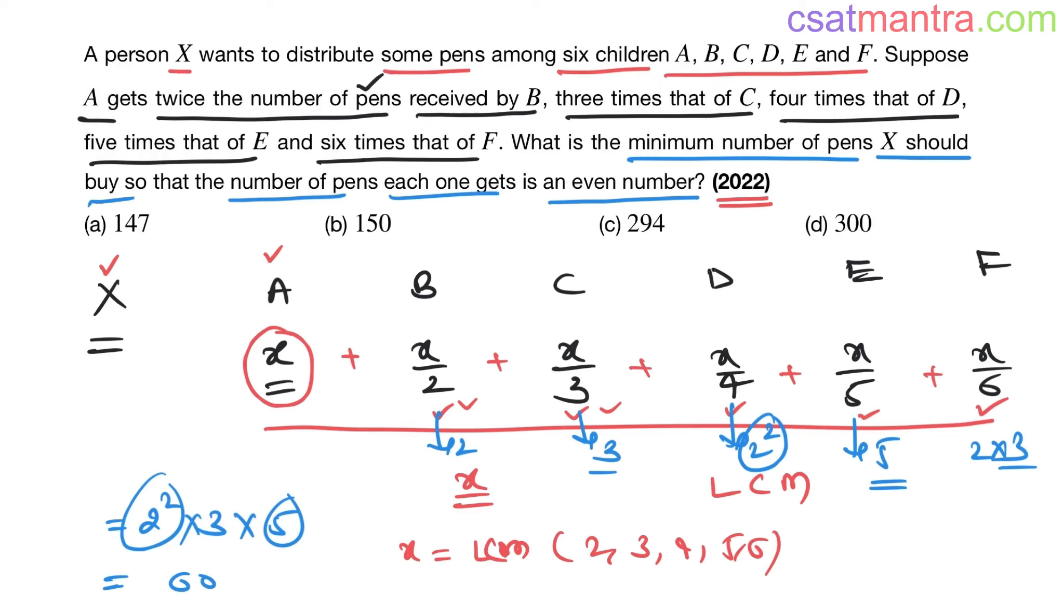When X is 60, X by 2 would be 30. X by 3, 20. X by 4, 15. The number of pens each one get should be an even number. But 15 is odd number. So if X is 60, we are getting odd. Next multiple of 60 would be 120.